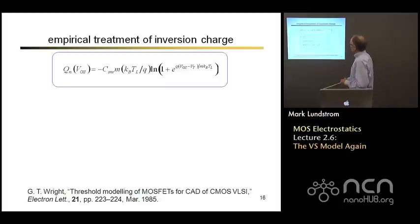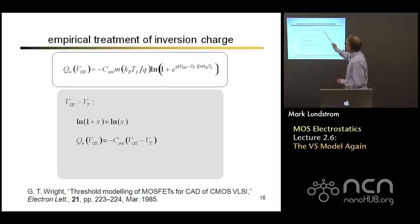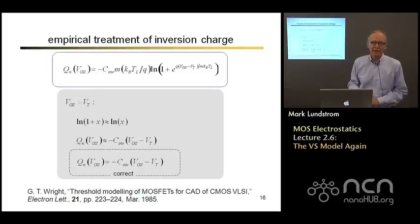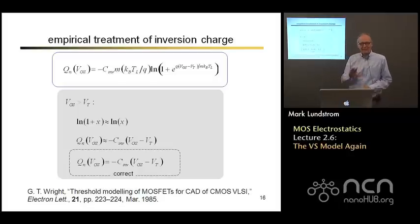Now, if we look above threshold, then logarithm 1 plus x, we can ignore the 1. We'll take the logarithm of the exponential. We just bring down V_G minus V_T, and we get inversion level charge is proportional to V_G minus V_T. And that's exactly the right expression. So this is an empirical expression that has the right behavior in the two limits.